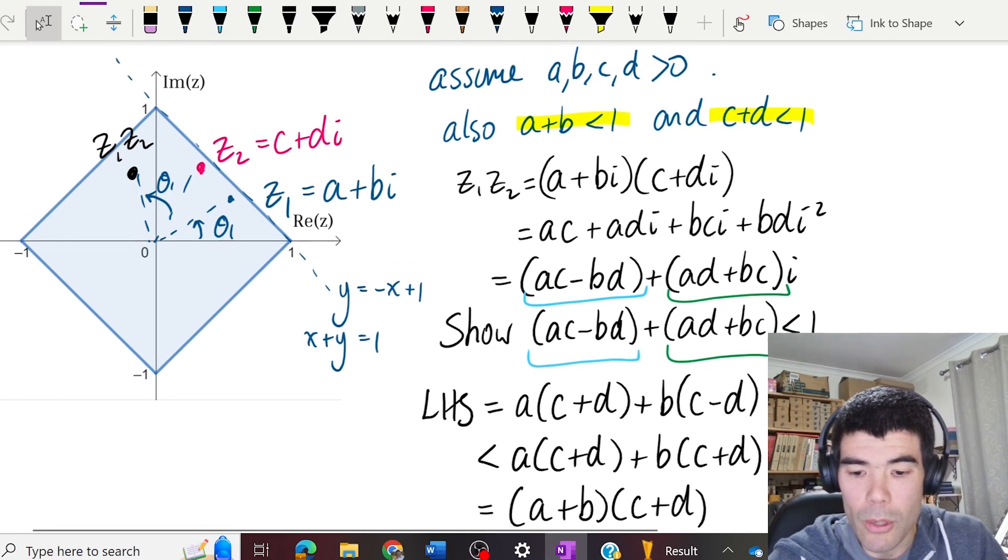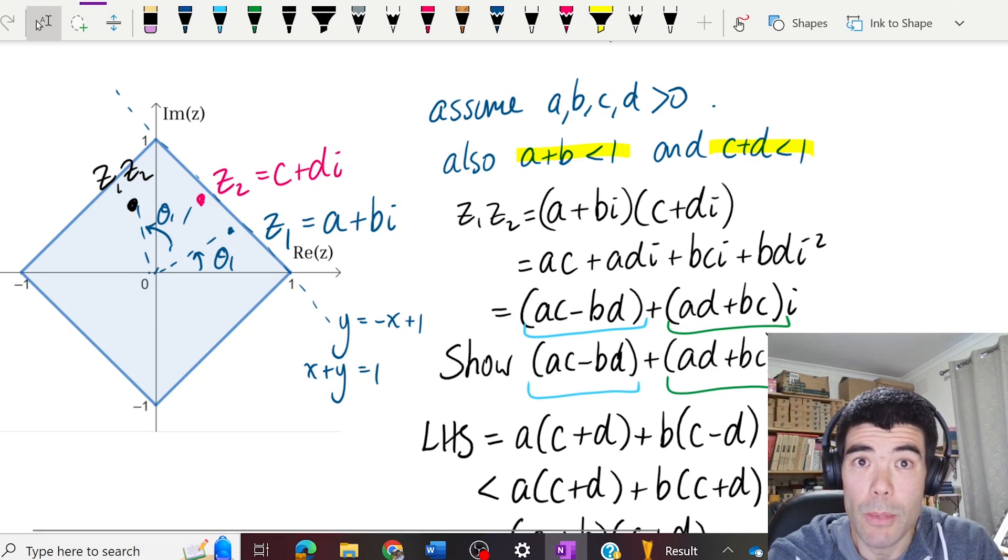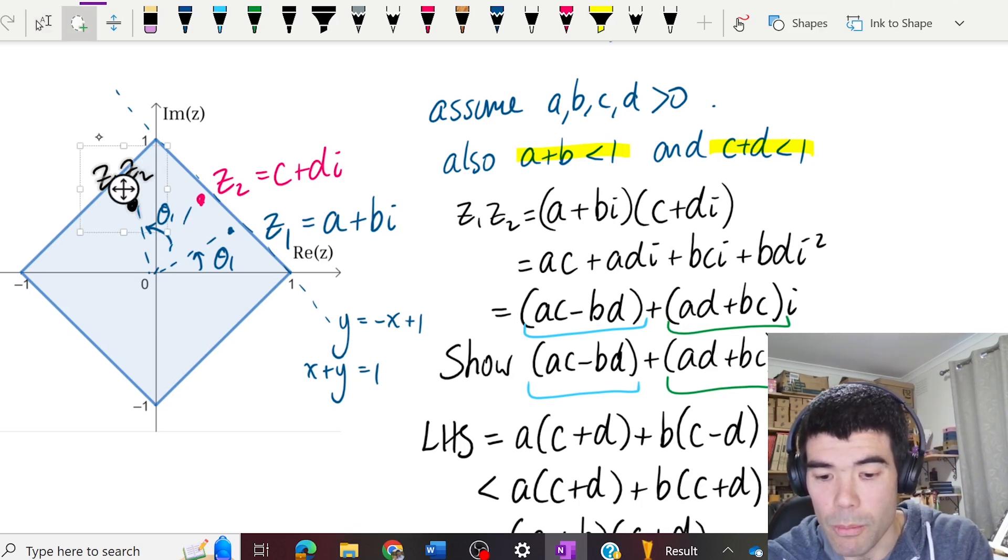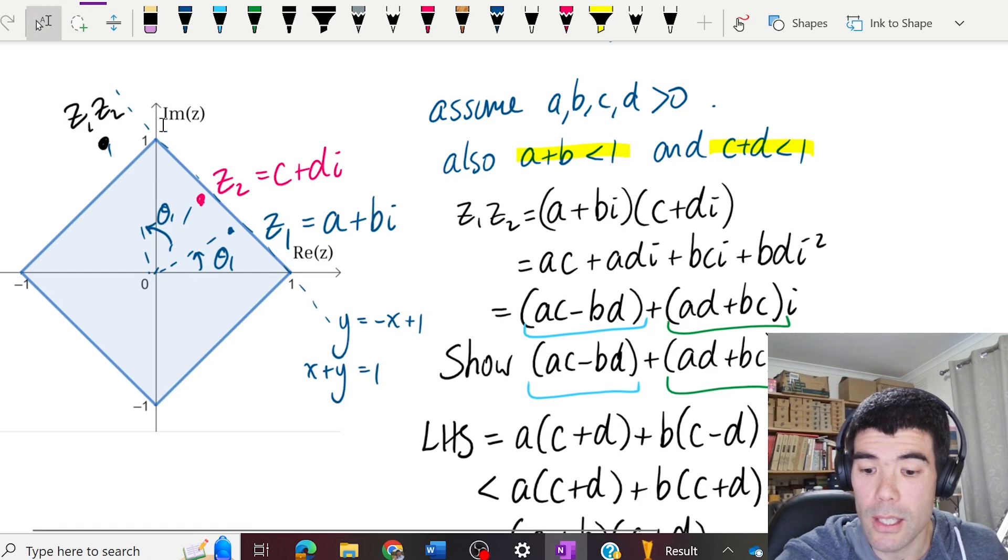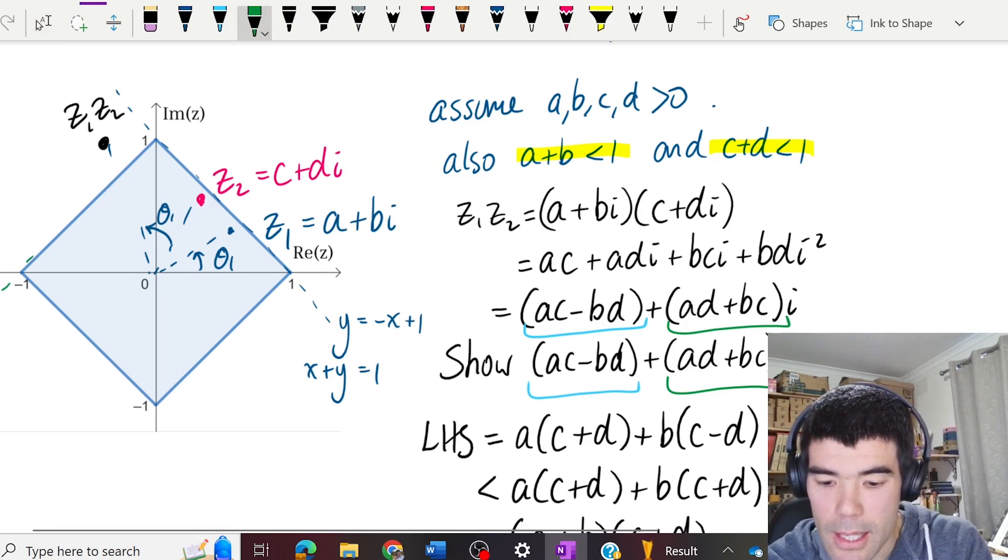So then, well, I'm not really too interested whether I'm below this line x plus y is equal to one, because z1 z2 could be up here, and still below the line x plus y is equal to one. But that's no good, because that doesn't guarantee I'm inside the square. So now I need to consider this line.